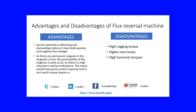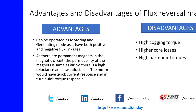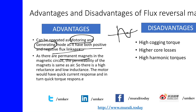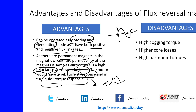Now the advantages and disadvantages. First, it can be operated in four quadrants because the flux is on both positive and negative sides, so it can be operated in both motoring mode and generating mode. Because there are permanent magnets in the magnetic circuit, the permeability is like air, leading to higher reluctance, which means low inductance. Because of low inductance, there will be a very quick current response, which means very quick torque response — since torque is proportional to current.